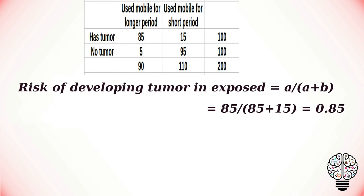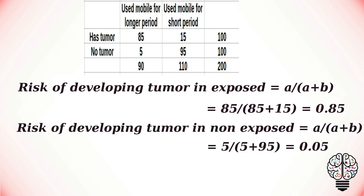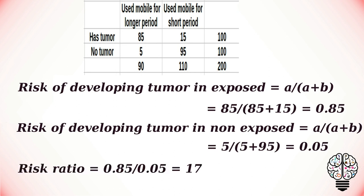To find the risk of developing a tumor in the exposed group, we use the corresponding formula. To find the risk in the unexposed group, we use the other formula. To calculate the risk ratio, we divide the risk in the exposed group by the risk in the unexposed group: 0.85 divided by 0.05, which gives a risk ratio of 17. This implies that people who use mobile phones often are 17 times more likely to get brain tumors than those who use mobile phones for less time.